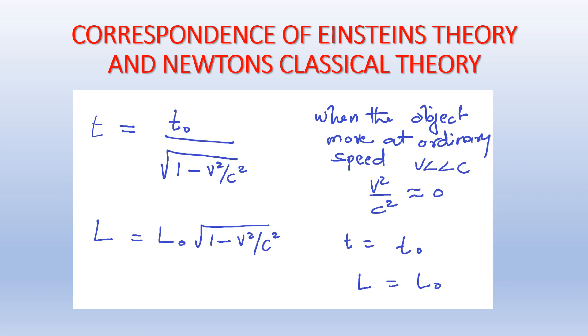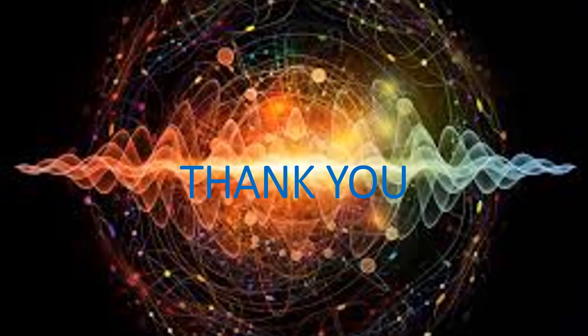So we can say there is a correspondence between Einstein's theory and Newtonian classical theory, but with the limit that Newtonian mechanics is applicable only at lower speeds. Here we discussed the correspondence between old theories and new theories: when a new theory exists, it must explain the well-established results given by the older theories.